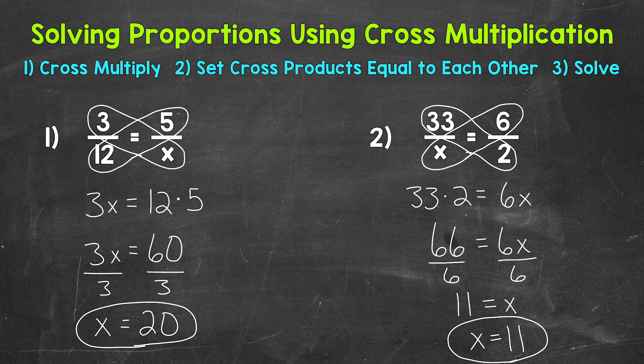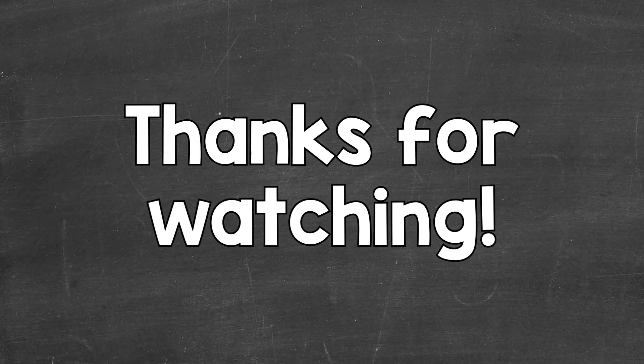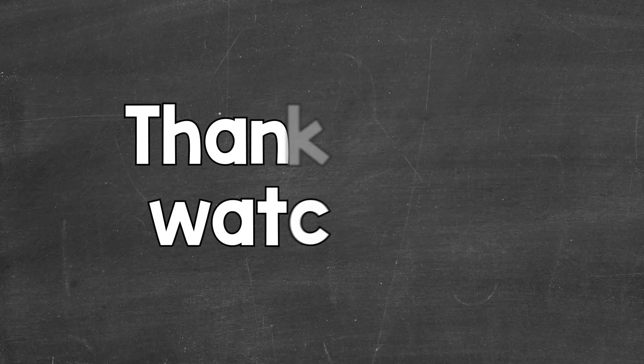So there you have it — that's how you solve a proportion using cross multiplication: cross multiply, set the cross products equal to each other, and solve. I hope that helped. Thanks so much for watching.